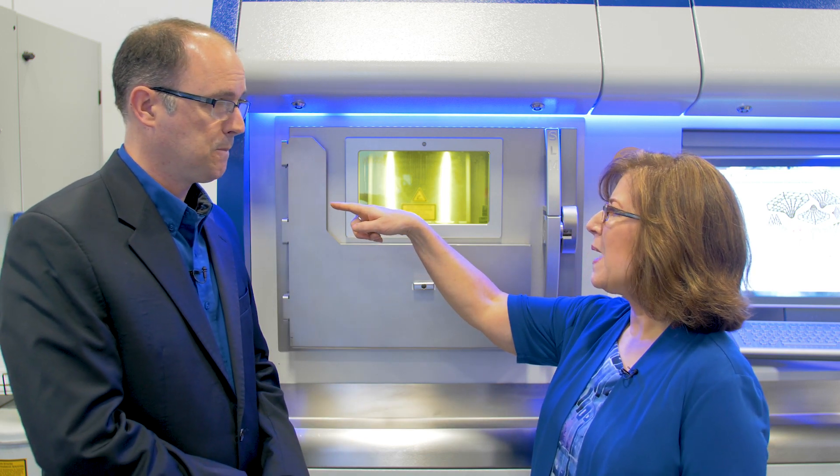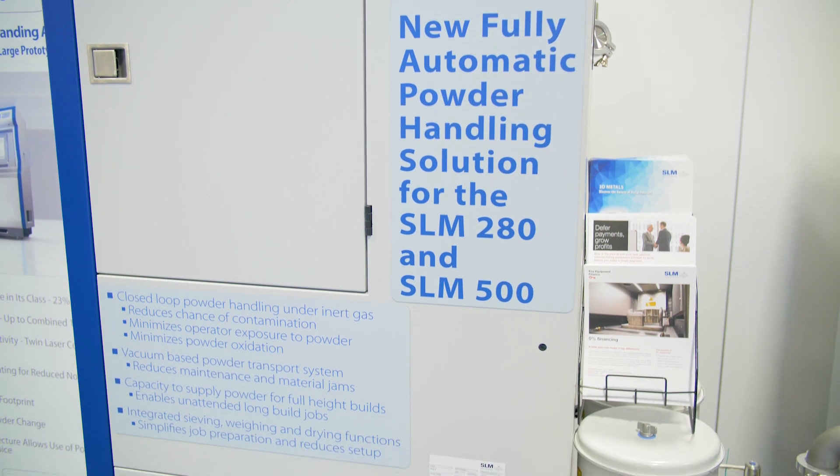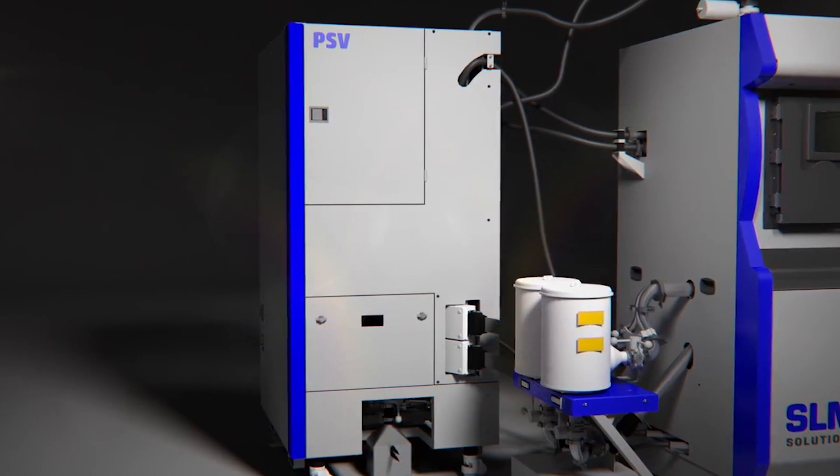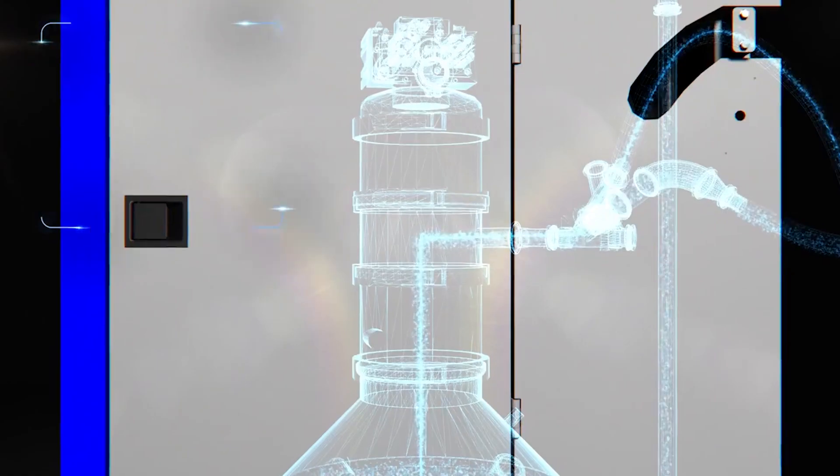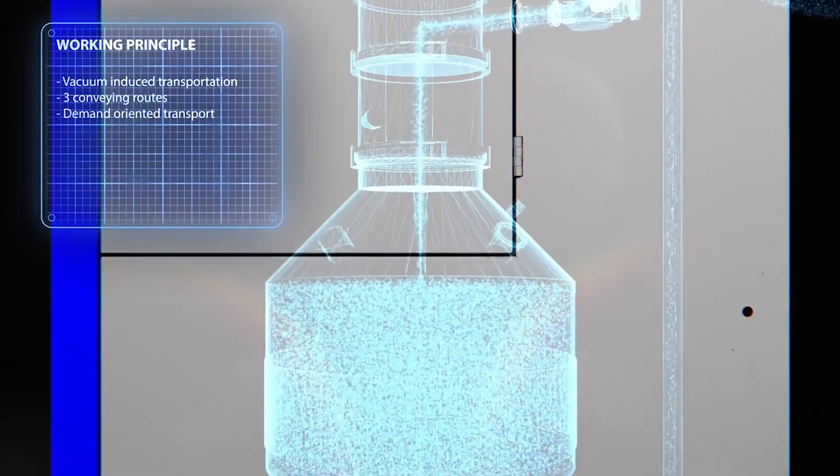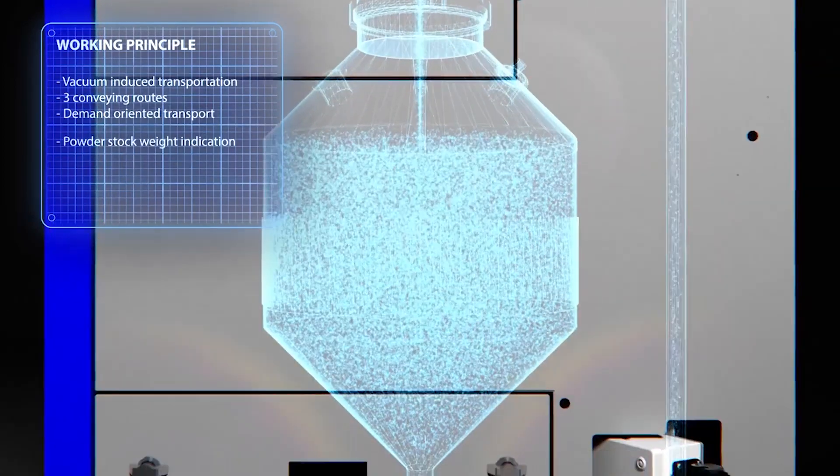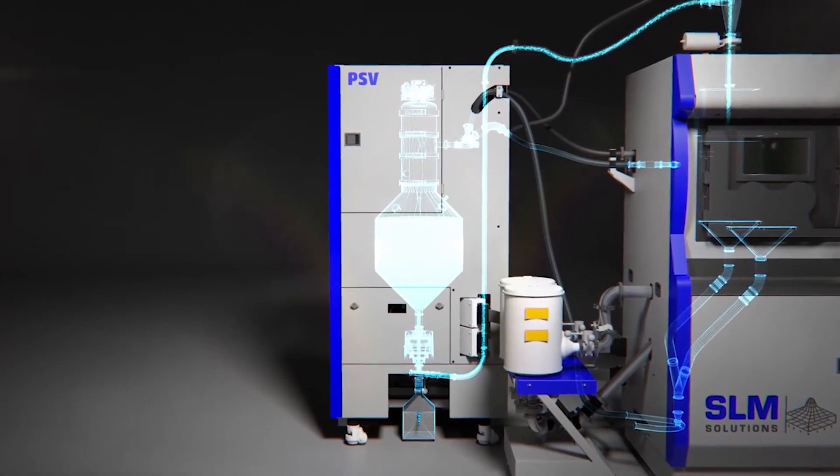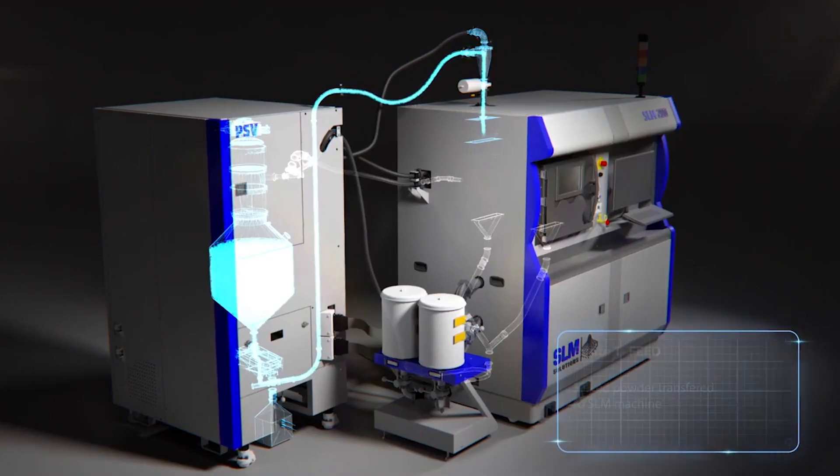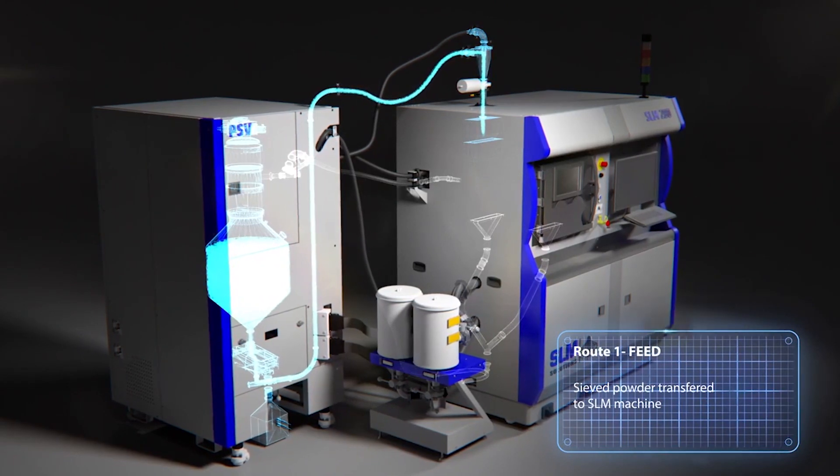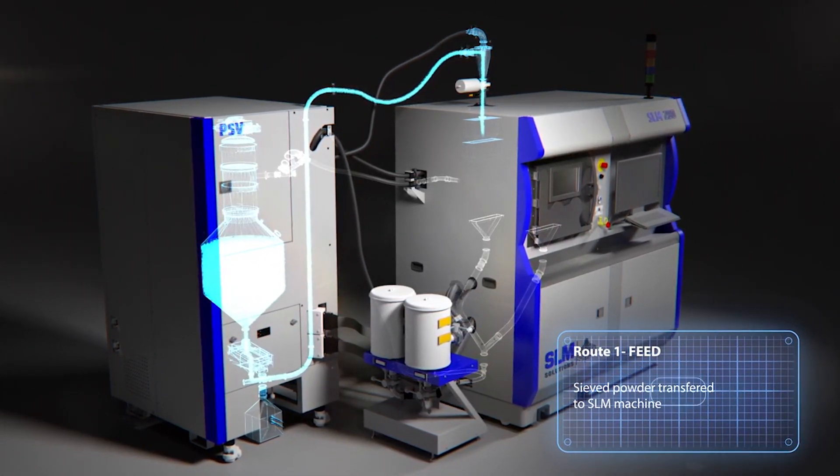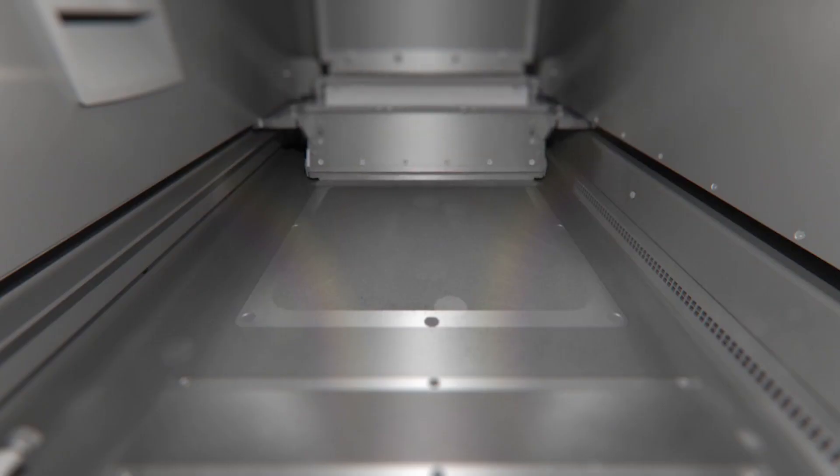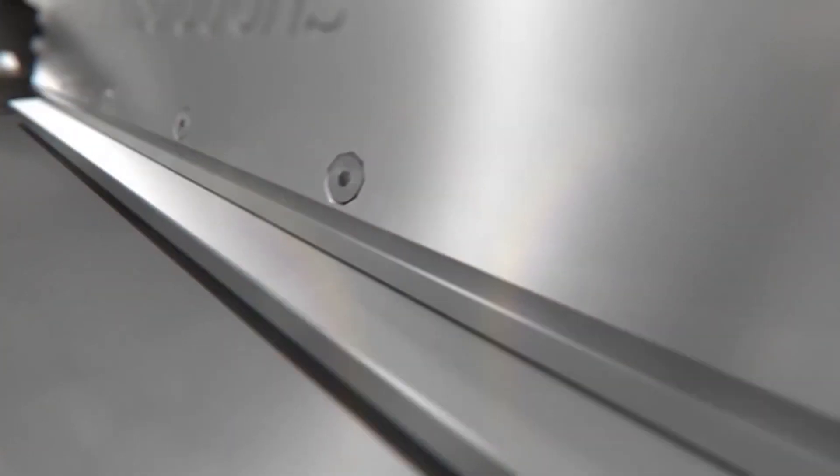And you're also showing this powder recovery system or powder management system? Yeah. So the PSV is also brand new. It just came out a few months ago, and can be attached to the 280 or the 500. It's for the complete management of the powder. You can vacuum the powder out of the build chamber, sieve the powder, store the powder, return it to the system. Everything is completely closed. The operator doesn't have to touch the powder in any way, never exposed to the powder. Keeps it under argon, keeps it dry, and it's fully recycling the powder. So you switch the machine on, you walk away. PSV takes care of everything to do with the powder.